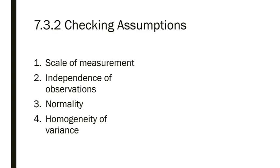The third assumption is normality — each group of scores should be approximately normally distributed, drawn from a population with a normal distribution. One-way between-groups ANOVA is generally robust with respect to moderate violations of this assumption, though it's still important to check. The last assumption is homogeneity of variance — there should be approximately equal variability in each set of scores. We can assess normality using SPSS's Explore function, and we will evaluate homogeneity of variance when we actually conduct the analysis of variance, just as with independent samples t-tests.